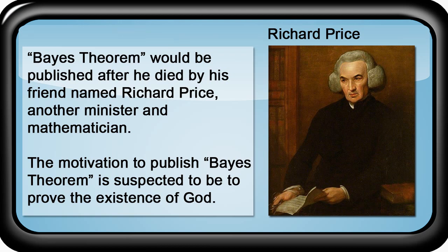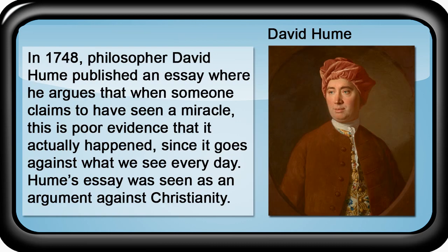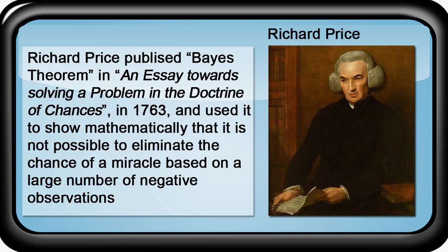The motivation to publish Bayes' Theorem is suspected to be to prove the existence of God. In 1748, philosopher David Hume published an essay arguing that when someone claims to have seen a miracle, this is poor evidence that it actually happened, since it goes against what we see every day. It was generally understood that Hume's essay was an argument against Christianity. Thomas Bayes died in 1761, and Richard Price published Bayes' Theorem in an essay titled 'Towards Solving a Problem in the Doctrine of Chances' in 1763. As a Christian and believer in miracles, Price took exception to Hume's essay and saw Bayes' Theorem as a way to prove David Hume wrong.